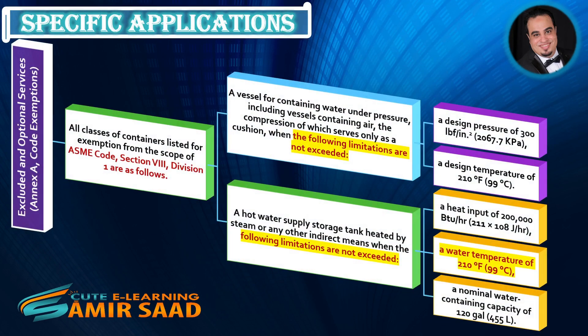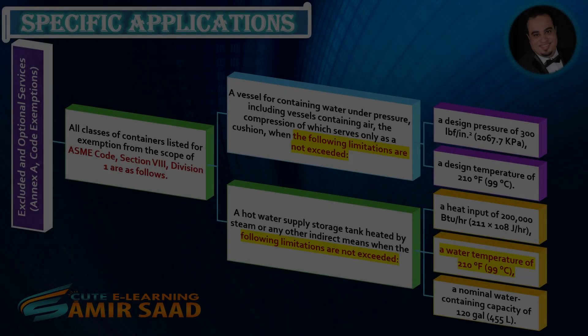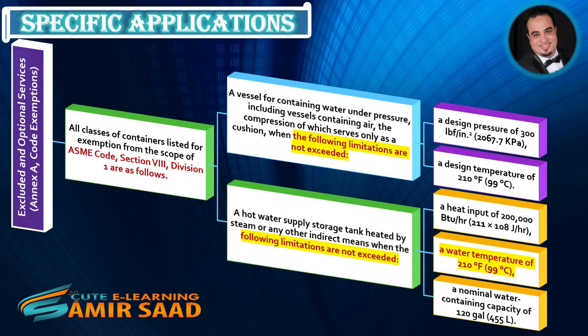Also excluded: a vessel for containing water under pressure, including vessels containing air the compression of which serves only as a cushion, when the following limitations are not exceeded — design pressure of 300 PSI and design temperature of 210°F; and a hot water supply storage tank heated by steam or any other indirect means, when the following limitations are not exceeded — heat input of 200,000 BTU/hr, water temperature of 210°F, and nominal water-containing capacity of 120 gallons.